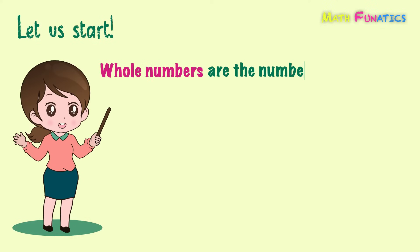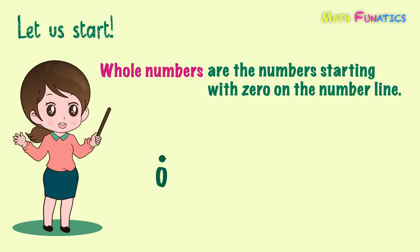Whole numbers are simply the numbers starting with 0 on the number line. So we have 0, 1, 2, 3, 4, 5, and continue all the way to infinity.